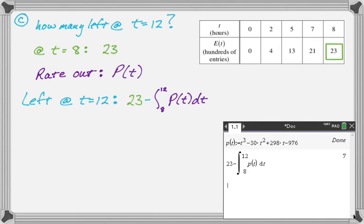And then this is a calculator problem, so we use the calculator, you get exactly seven. So I think it's incredible that they're able to write a problem where that integral works out so well. So we get exactly seven. And then the units for this are hundreds of entries again, because we are figuring out E of t, well, we're not figuring E of t, but it has the same units as E of t. So this will be hundreds of entries.